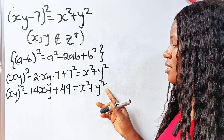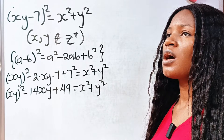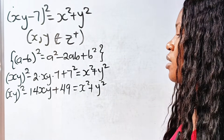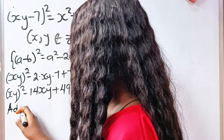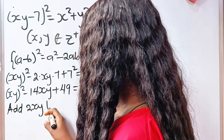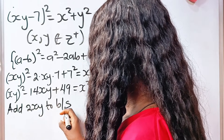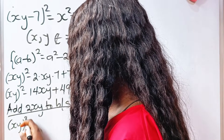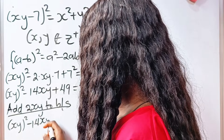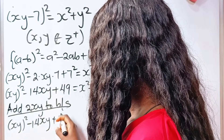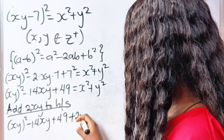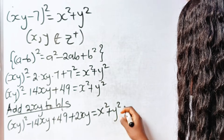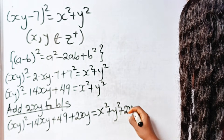Now let's add 2xy to both sides of the equation. The essence is I want to form (x + y)² from this side. So adding 2xy to both sides, we have (xy)² - 14xy + 49 + 2xy is equal to x² + y² + 2xy.